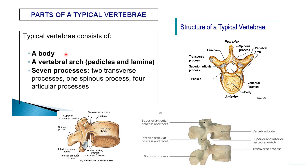A typical vertebra consists of: a body placed anteriorly; a vertebral arch formed of laminae and pedicle; and a vertebral foramen through which the spinal cord passes. There are seven processes: two lateral transverse processes, one spinous process posteriorly, and four articular processes (two superior and two inferior). The inferior articular process of the upper vertebra joins with the superior articular process of the lower vertebra, forming the vertebral column.